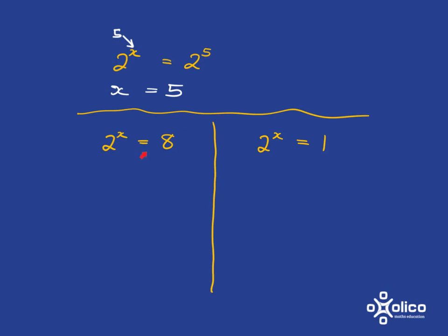So if we've got something like this, 2 to the x is equal to 8, what can we do? We know that it's really easy to solve if we have 2 to the x is equal to 2 to the something. So all we have to do is try and get 8 into the format 2 to the something. So you should know quite well by now that 8 is just 2 cubed.